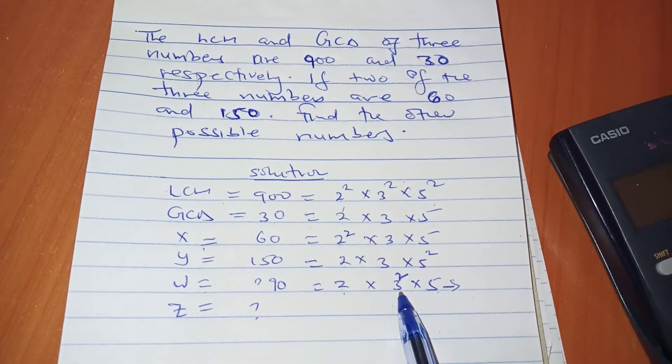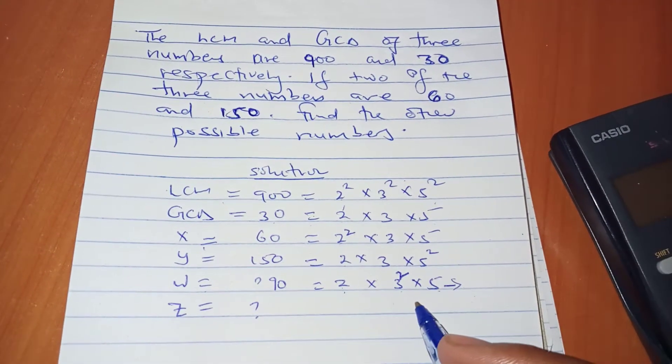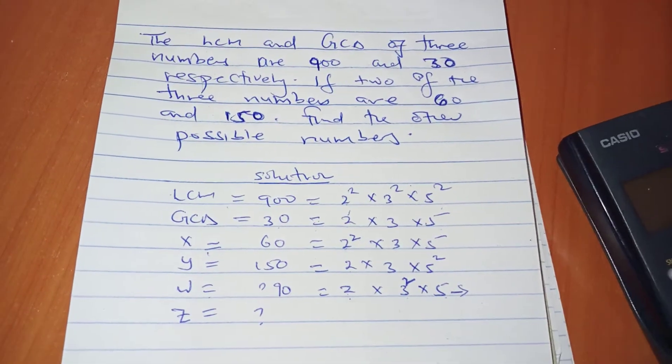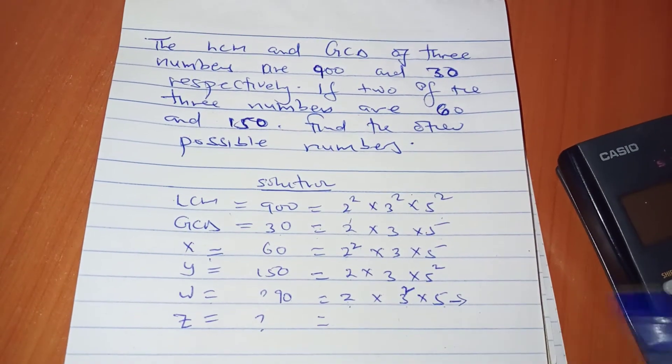90 is the minimum number. If you multiply this out, that's 18 times 5, which equals 90. See how easy it is now to generate other numbers from this.